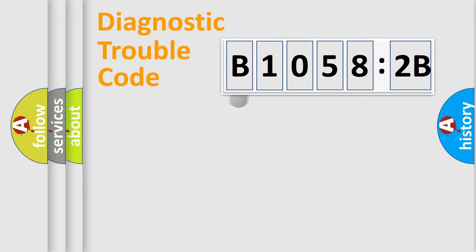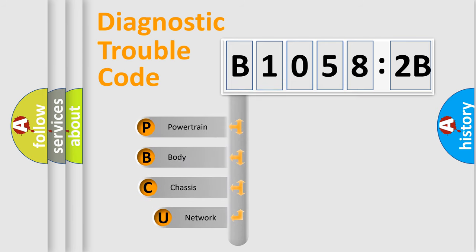First, let's look at the history of diagnostic fault code composition according to the OBD2 protocol, which is unified for all automakers since 2000. We divide the electric system of automobile into four basic units.